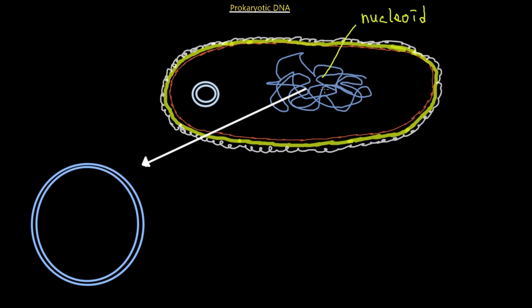So if we were to just take this nucleoid and stretch it all out, it's going to look like this. It's double-stranded, it is circular, and it is a single chromosome. That's typically what the prokaryotic DNA would look like if we were to unravel the nucleoid.